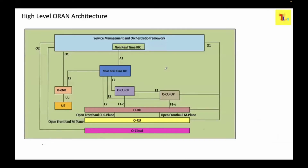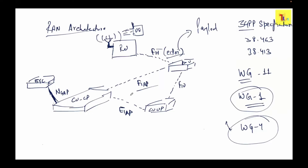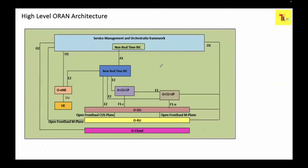This is the high-level O-RAN architecture. The architecture includes CU-CP, UP, DU, and RU — this is your RAN architecture. Moving towards O-RAN architecture as defined by Working Group 1, you can see CU-CP, UP, ODU, and ORU. This is your open fronthaul — the CUS plane and M-plane.